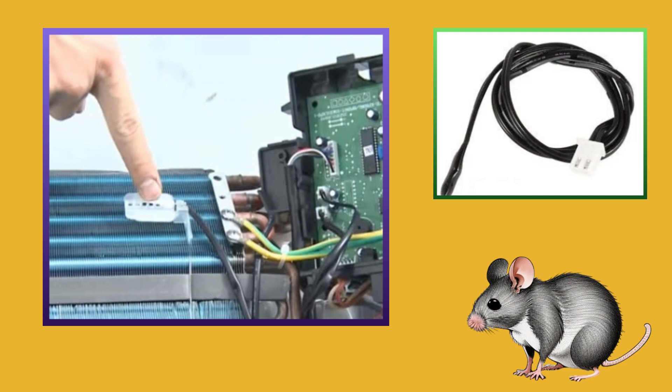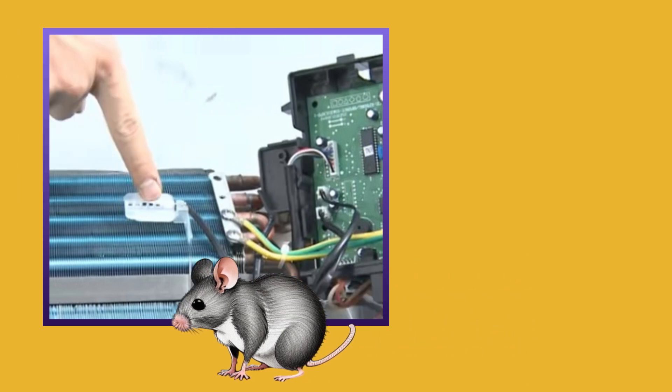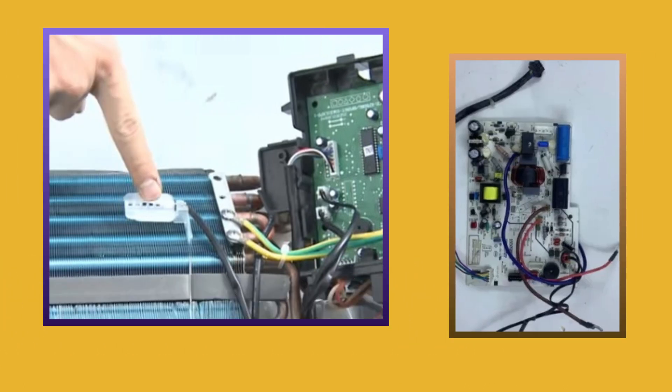And if the rat has not cut the wire of the room temperature sensor and still this error is coming, look at the sensor connector in the PCB. This error also occurs due to loose connection. If you remove the connector and reinsert it, this error will be fixed.